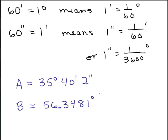So our goal is to figure out how to convert back and forth. If you're given something in degrees and minutes, or degrees, minutes, and seconds, how could you convert it to decimals? And if you have something in decimals, how could you convert it to degrees, minutes, and seconds?